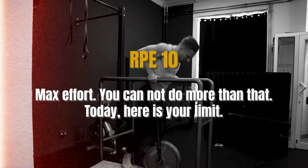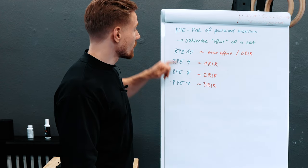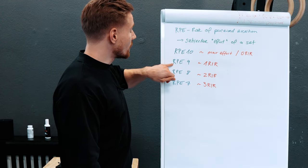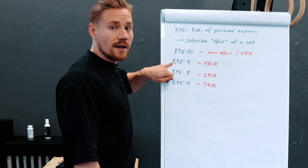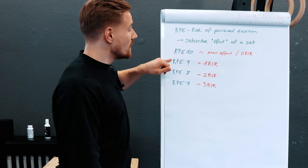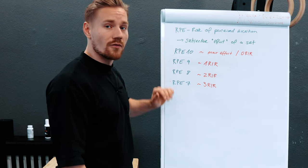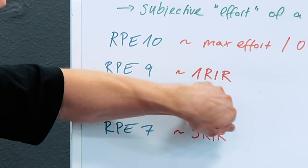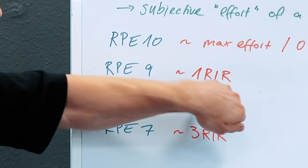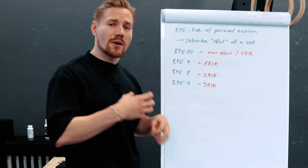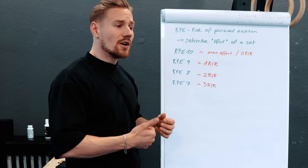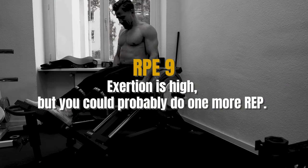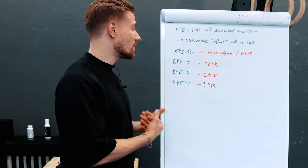Going down the scale, we reach RPE 9, meaning you roughly have one rep in the tank. That doesn't need to be very precise — roughly one rep — but from the feeling, you could have done more; you could possibly have done one more repetition with the same weight.